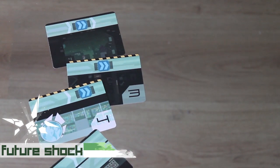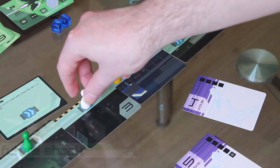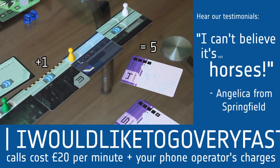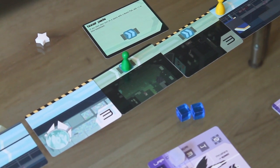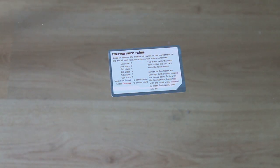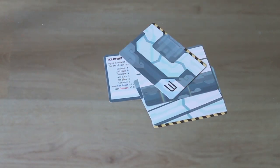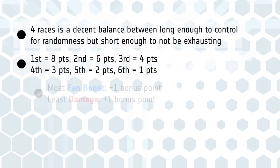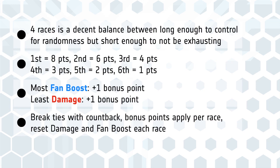Future Shock adds boost pads. When you end your turn on a boost pad, you get a free space of movement at the start of your next turn. It's just that easy. This can also create traps where you get boosted into a wall around a hairpin. The Omega Wing expansion gives you tournament rules. Technically this isn't a feature of the track cards, you can just have tournaments without it, but there's track pieces in here anyway that you can use without any special rules. Tournaments are typically four races with points awarded based on finishing position and bonus points for finishing with the most fan boost and the least damage.